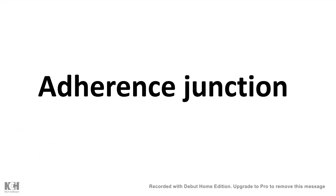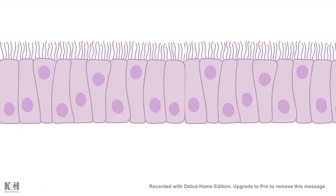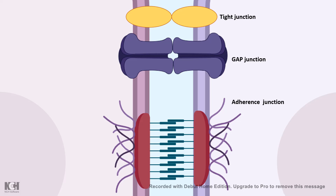In this video I'll be talking about adherence junctions. In epithelial cells there can be multiple different types of cell junctions — adherence junctions, gap junctions, tight junctions, and so on. In this particular video we'll focus on adherence junctions and their physiological relevance and importance in development and cancer.